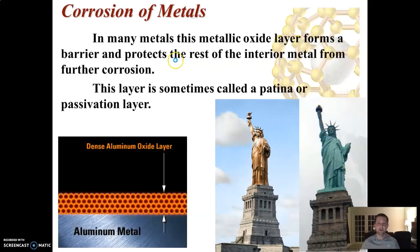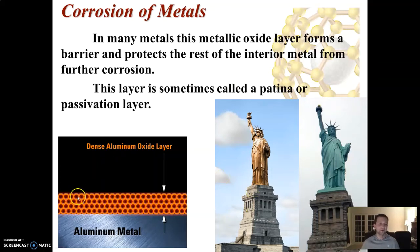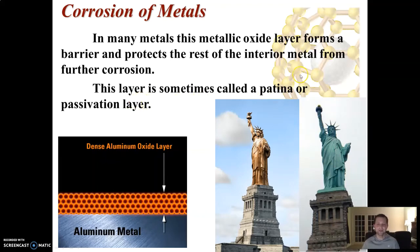In many metals, the oxide layer that forms on the surface actually protects the interior metal from further corrosion — though this doesn't apply to iron rust, which weakens the structure. For example, aluminum forms a dense aluminum oxide layer that protects the interior aluminum from more corrosion. The Statue of Liberty is another example: that outer layer of corrosion, sometimes called a passivation layer, protects the copper beneath.